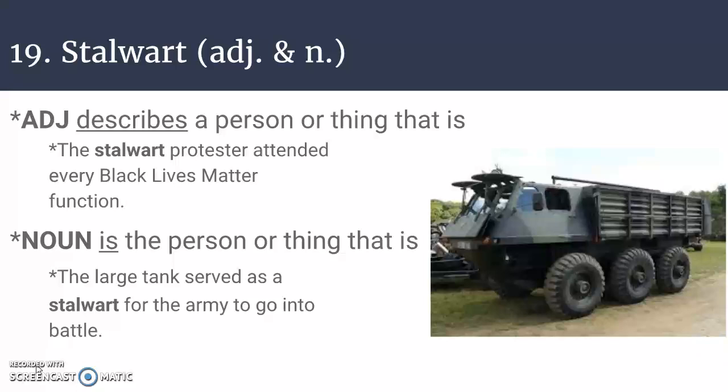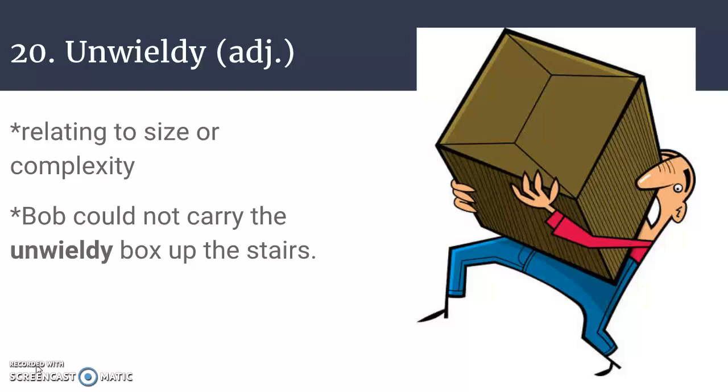Number nineteen is stalwart, which can be both an adjective and a noun. The definition for stalwart is strong and sturdy, brave, resolute — or it could mean a strong supporter, one who takes an uncompromising position. As an adjective, the stalwart protester attended every Black Lives Matter function. As a noun, it is the person or thing that is strong or sturdy — the large tank served as a stalwart for the army going into battle.